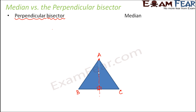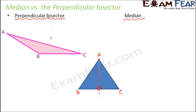But that doesn't mean they will always coincide. Consider an obtuse-angle triangle — we have an obtuse angle here. If we draw the perpendicular bisector for side BC, it has to be a line which bisects BC and is also perpendicular to BC. So let's say this is the midpoint of BC, call it point O — the perpendicular bisector is 90 degrees on BC and divides it into two equal halves, BO and OC.